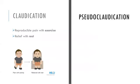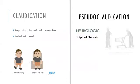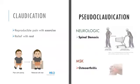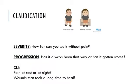Other conditions may mimic claudication. Think of spinal stenosis if the pain is brought on with weight-bearing or standing, and better when bending over or lying down. Suspect arthritis in patients with joint pain, worse in the morning, often better with activity, and not promptly relieved with rest. During your history, assess the severity of claudication by getting an idea of their claudication distance and whether this is stable or not, and if not, how quickly it is progressing.